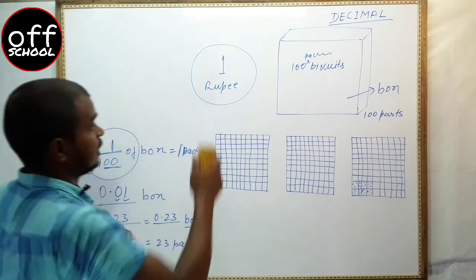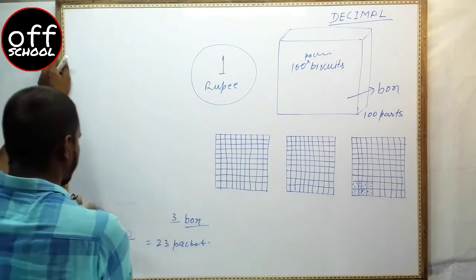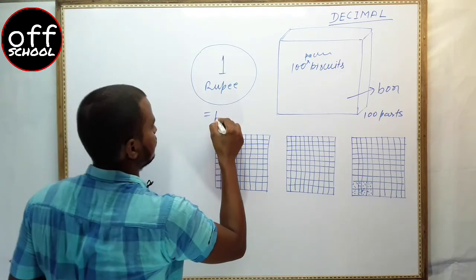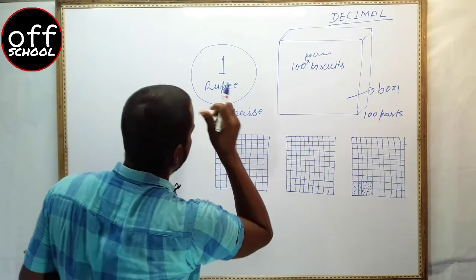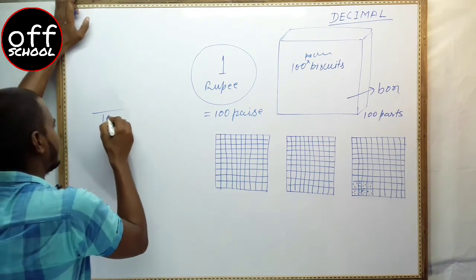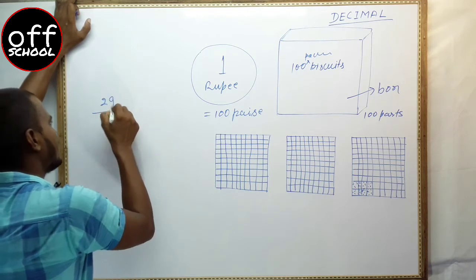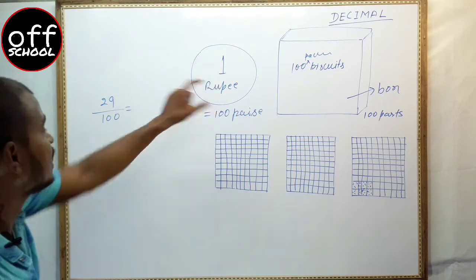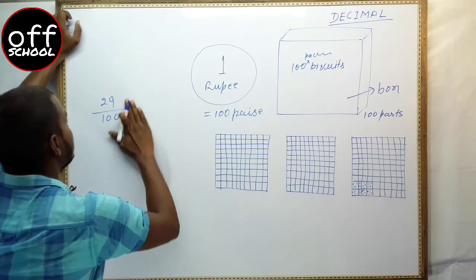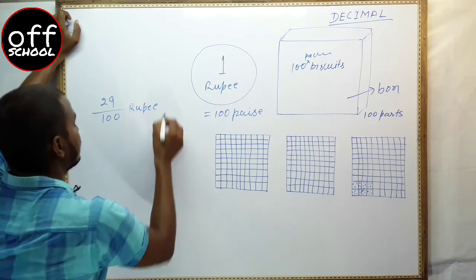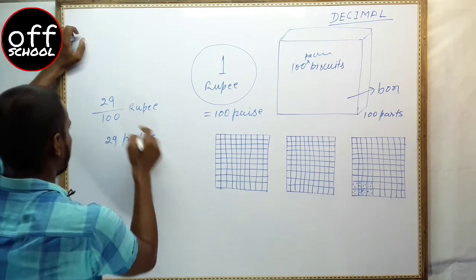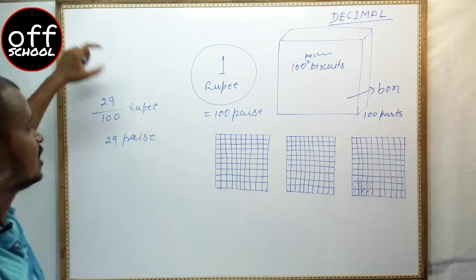Next, let's look at the example of a rupee coin. How many paise are in one rupee? There are 100 paise in one rupee. So if you want to write 100 paise in rupee form, it is one rupee. You divided one rupee into 100 parts and took 29 paise. So this represents 29 by 100 rupee. In terms of paise, this represents 29 paise. We have written this in decimal fraction form.